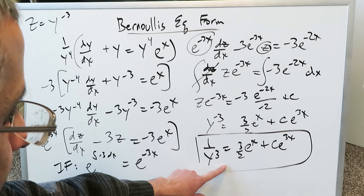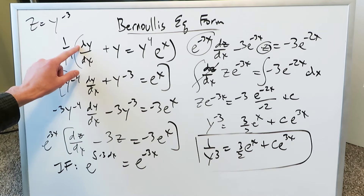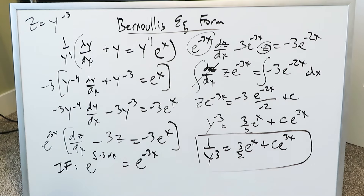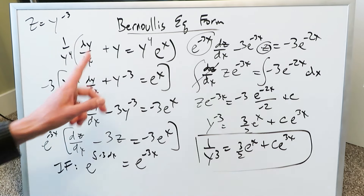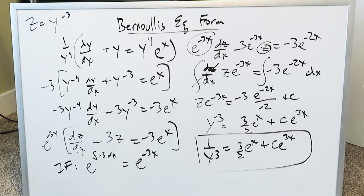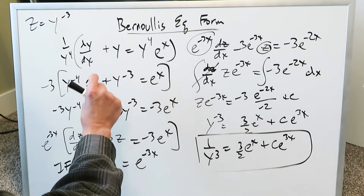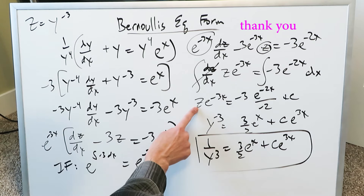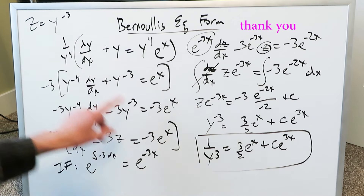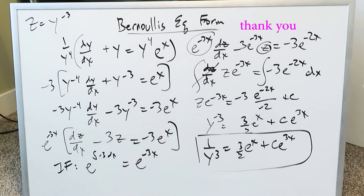This represents the function for which this differential equation — dy/dx plus y equals y to the power of 4 times e to the x — is true, reminiscent of a Bernoulli's equation form. This style of first order differential equation is slightly difficult, but with practice the steps become routine. Remember: convert the Bernoulli's form into a linear form, apply the integrating factor technique, and at the end always resubstitute z for what it represented, expressing everything in terms of y and x. Thank you for watching, have a good day.